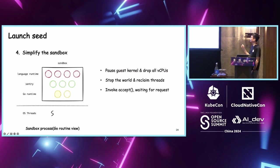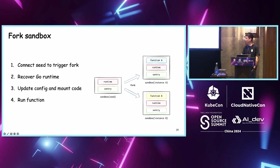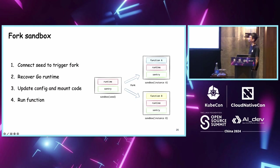It's time to fork the sandbox after we have prepared the seed. The fork process has mainly four steps: first, connect to the seed; after the connection succeeds, trigger the fork; after forking a new sandbox, recover the Go runtime and update some config from the user; and mount the user code, which represents a specific function like Function A or Function B, to run the function. After running the function, we send back the response.